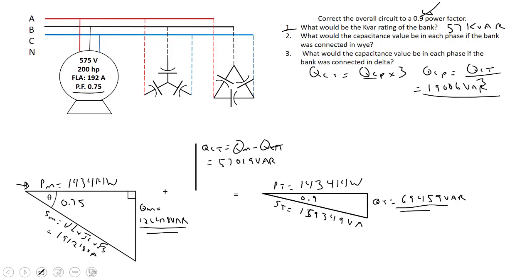That's the same whether it's Y or Delta. Now our new formula is XC equals our phase voltage squared divided by the VARs per phase from our capacitor bank or the QC per phase.